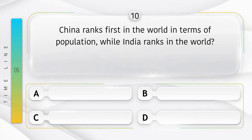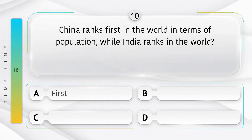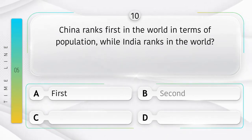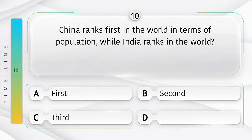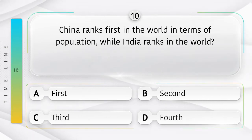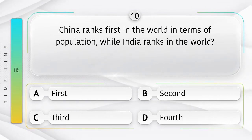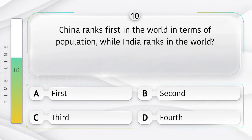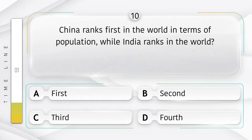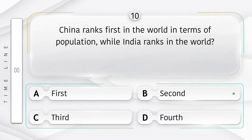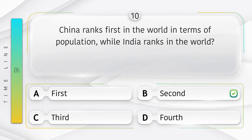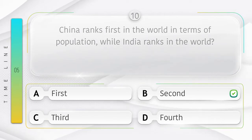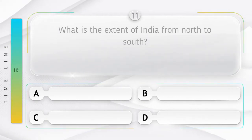China ranks first in the world in terms of population, while India ranks in which position? Option A: First, B: Second, C: Third, D: Fourth. Answer is option B: Second.